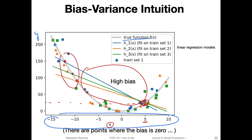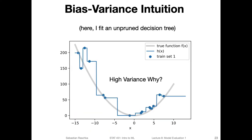Also in some regions there would be high variance, because as the training set varies, we see the models might be very different. Looking at the high-variance case: here I fit an unpruned decision tree, which has high variance because different datasets significantly affect the model. If having different training sets — even from the same population — causes the model to be very different, then we have high variance. So the predictions would be very scattered depending on how the training set looks.